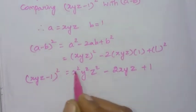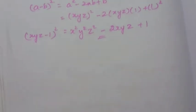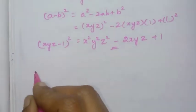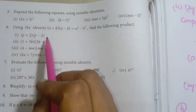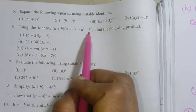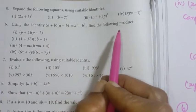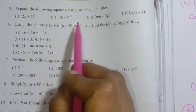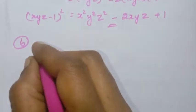Now we move to the next section. Using the identity a plus b into a minus b equals a squared minus b squared, we find the following products. Use this identity to solve the following problems.